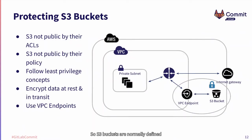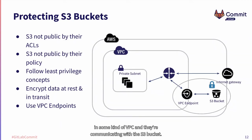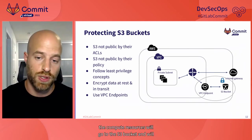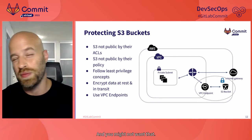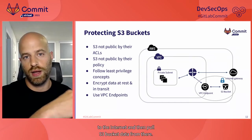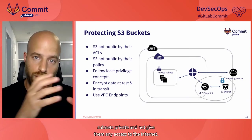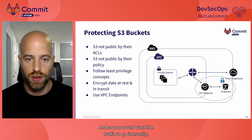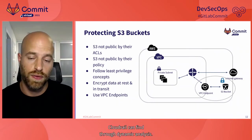Another example is around protecting S3 buckets. S3 buckets are normally defined in one set of code whereas compute resources are defined in another. The compute resources may be in a VPC and communicating with the S3 bucket. In a normal setup, those resources will access S3 data through the internet — but you might not want that. You may want to keep your subnets private, not give them internet access, and have S3 traffic go internally. AWS invented something called VPC endpoints for that, and it's one of the things that Cloud Rail can find through dynamic analysis.